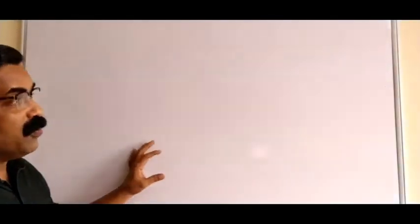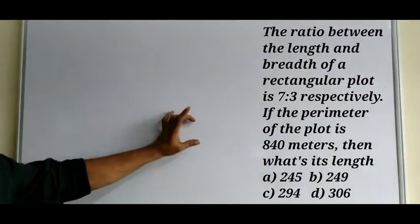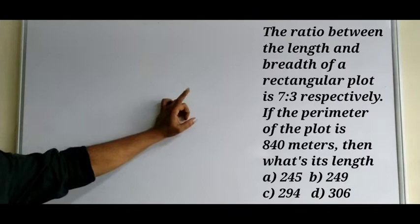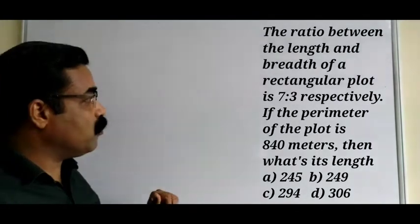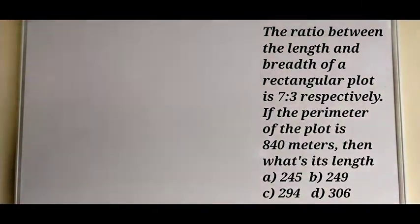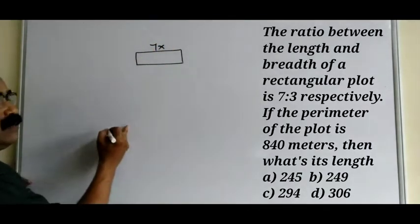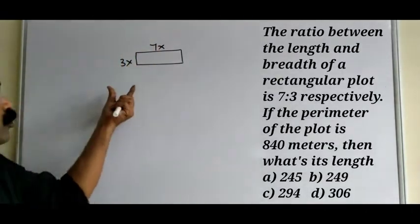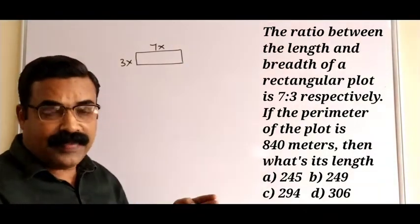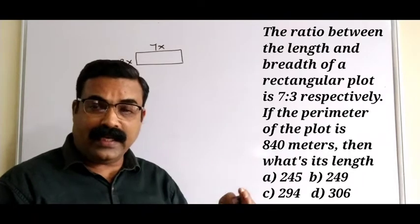Let us see the next question. The ratio between the length and breadth of a rectangular plot is 7:3. If the perimeter of the rectangular plot is 840 meters, what is its length? Four options are given. Whenever a ratio of 7:3 is given, we take the length as 7x and the breadth as 3x.